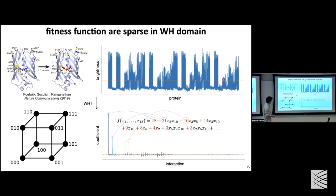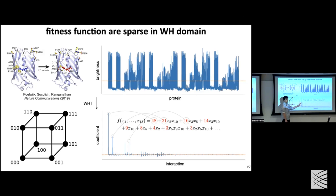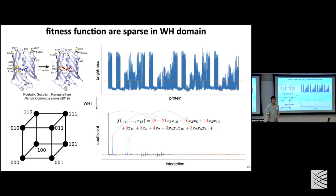On the empirical drop-off of terms: the 13-mutation study is one of the largest combinatorial examples in the literature. Typically there is a power-law decay. You mostly see significant first- and second-order terms; third- and fourth-order terms are visible. But if you go down to tenth-order interactions, it's effectively noise — not much energy there. This bodes well for inference, since the landscape is dominated by low-order terms.